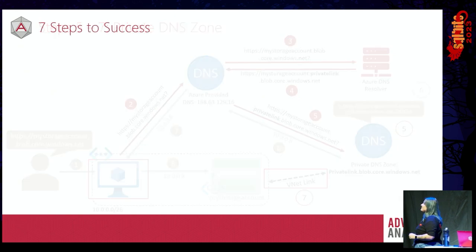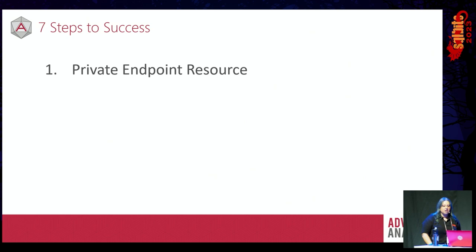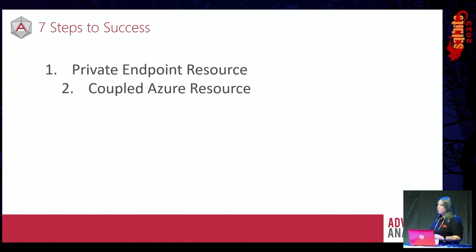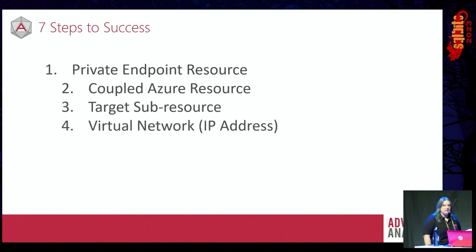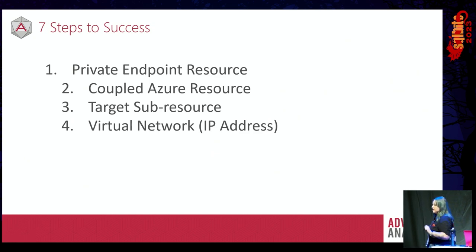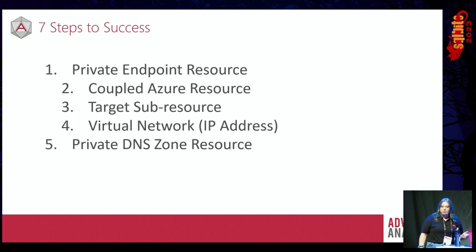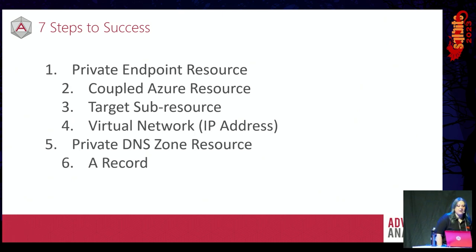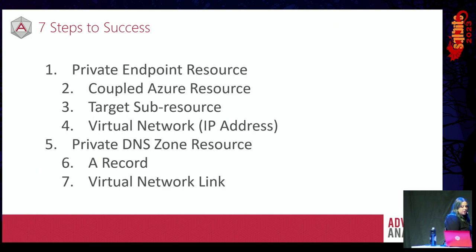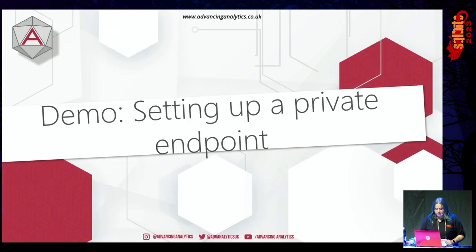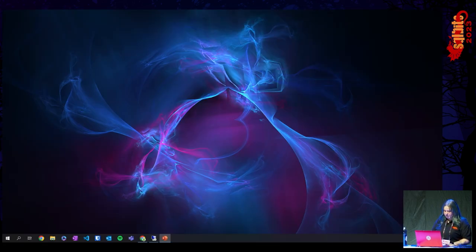To summarize the seven things: we've got a private endpoint resource; we need to tell it the coupled Azure resource and the target sub resource; and it also needs a virtual network from which it can pull its IP address. Steps one to four are all associated with the private endpoint itself. Step five is the private DNS zone resource. Step six is the A record. And step seven is the virtual network link. Steps five to seven are all centered around the private DNS zone.